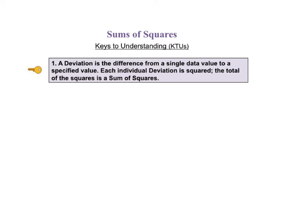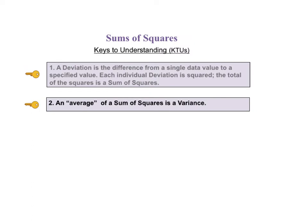As usual in the book and in these videos, we'll go quickly through a list of Keys to Understanding, or KTUs, to give you the overall picture on one page. And then we'll go into detailed explanations of each of the keys. For this video, there are four Keys to Understanding. The first KTU tells us that a deviation is the difference from a single data value to a specified value. Each individual deviation is squared. The total of the squares is a sum of squares. The second key states an average sum of squares is a variance.